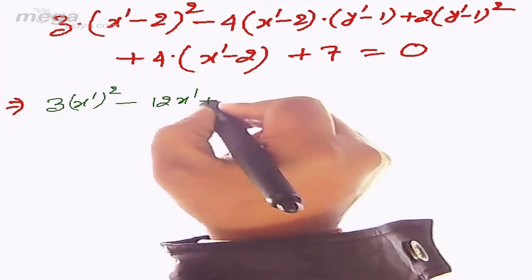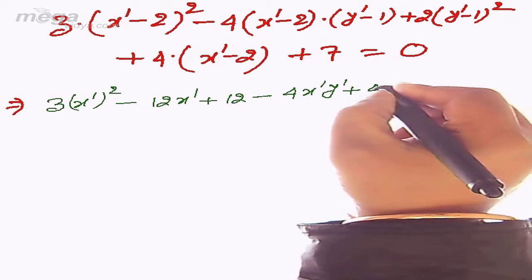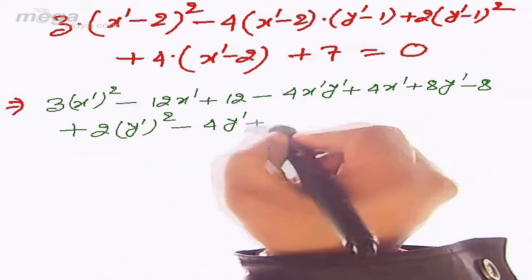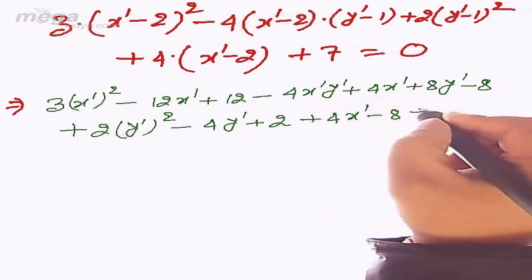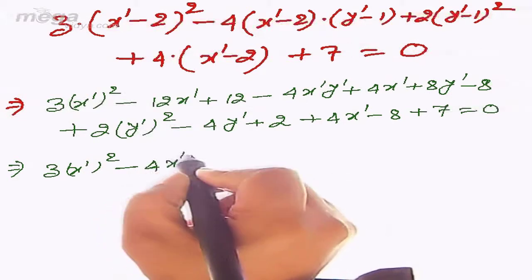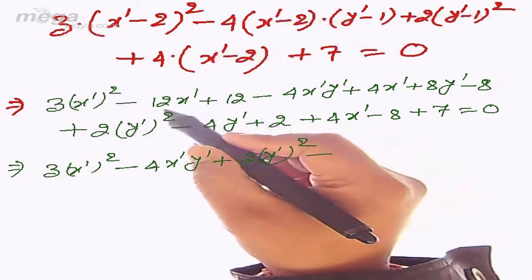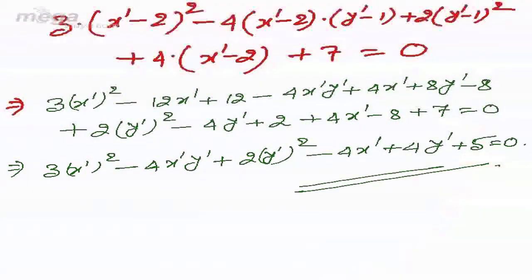Expanding and simplifying: 3x'² - 12x' + 12 - 4x'y' + 4x' + 8y' - 8 + 2y'² - 4y' + 2 + 4x' - 8 + 7 = 0, which simplifies to 3x'² - 4x'y' + 2y'² + 4y' + 5 = 0. This is the equation of the same curve in the new situation.